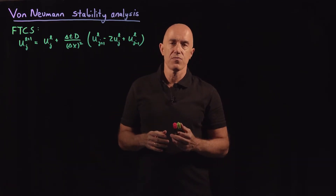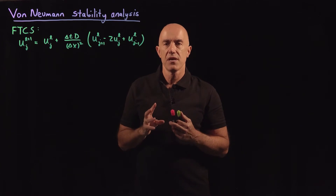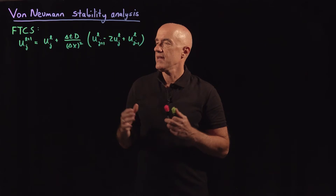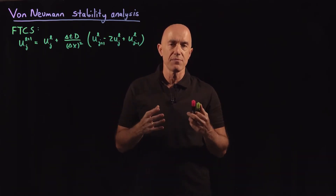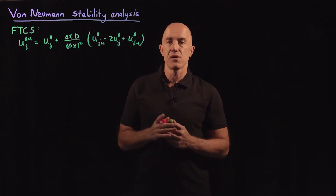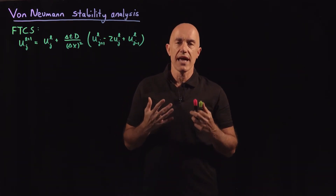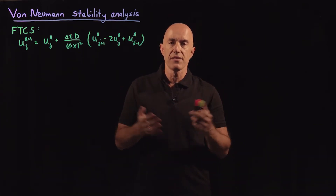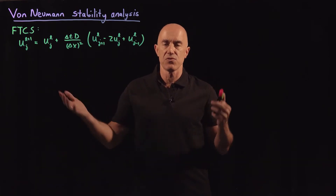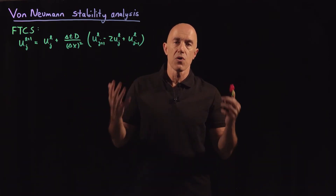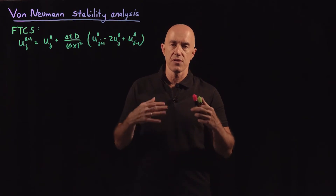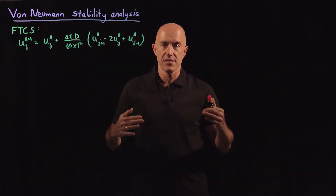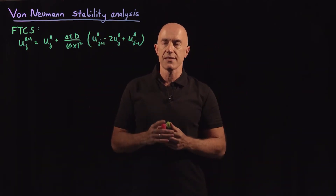One of the problems with explicit schemes for solving initial value problems for PDEs is that for too large a time step, the scheme can become unstable. We don't like an unstable scheme because if the time step is too large, the scheme will blow up — your solutions will go towards infinity. We know that for the diffusion equation, U should be decaying in time; a dye should diffuse and become less concentrated.